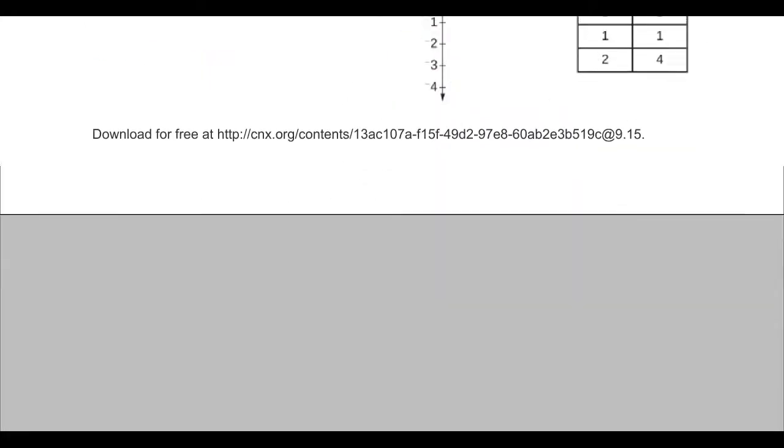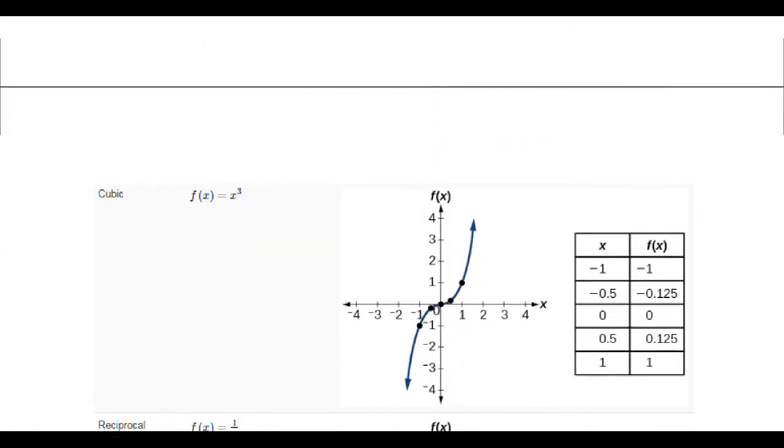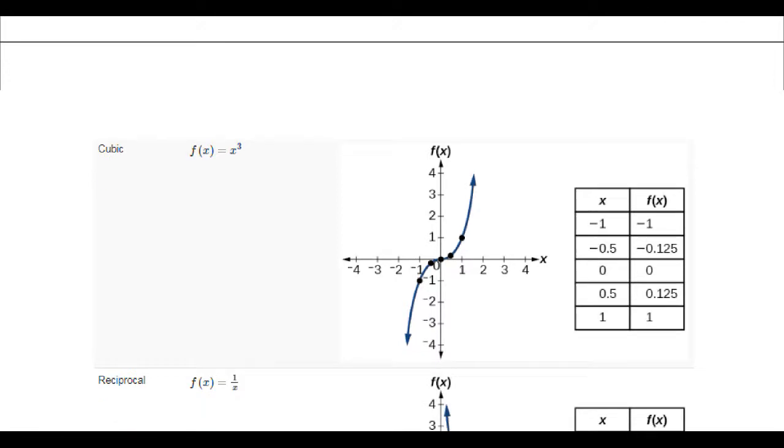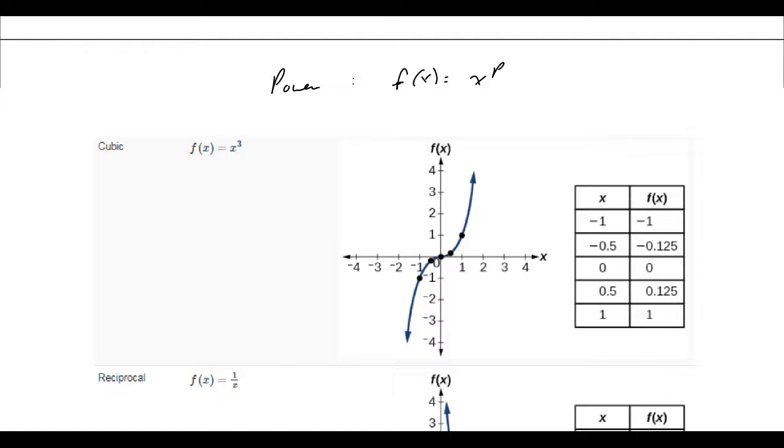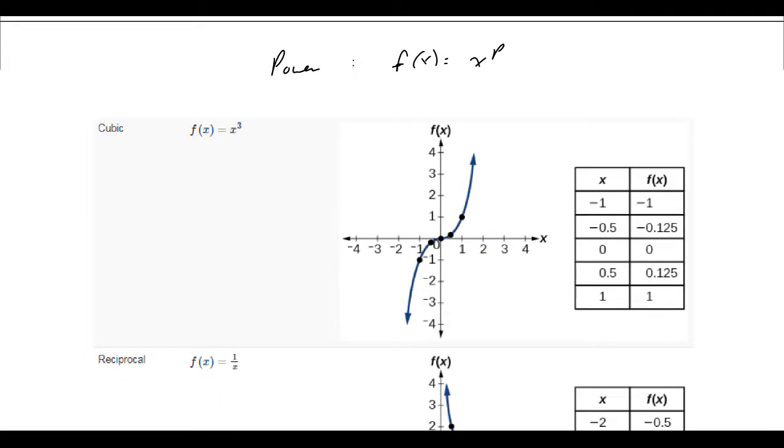Next we've got the cubic function, f of x equals x cubed, and I should point out that x squared and x cubed are considered power functions because they are just x to some power. Power functions are f of x equals x to the p, where that is our power, so anything in that form is a power function. For x cubed, its third differences are constant.